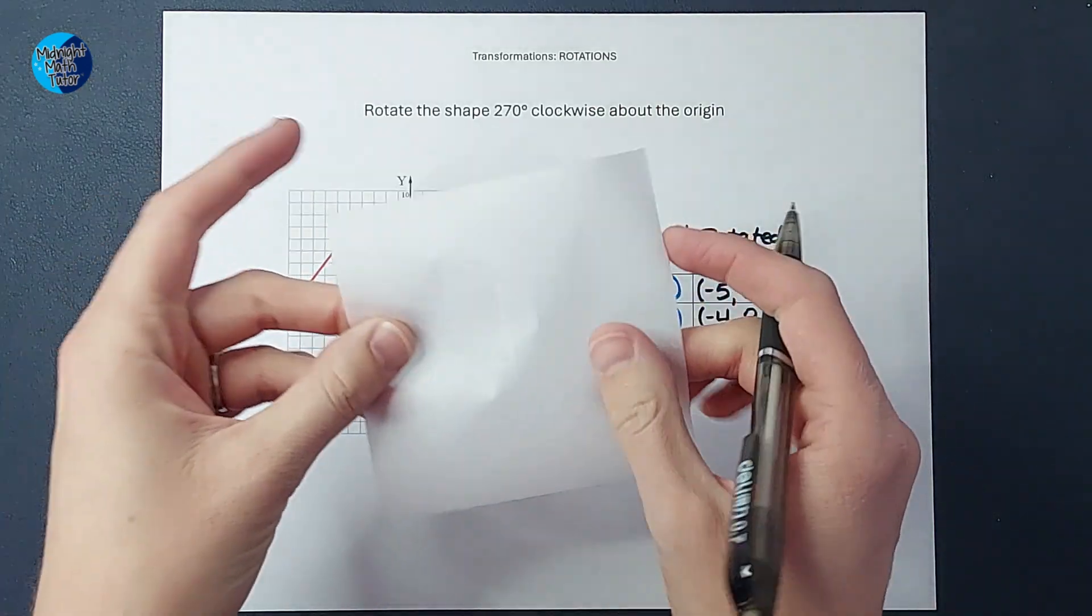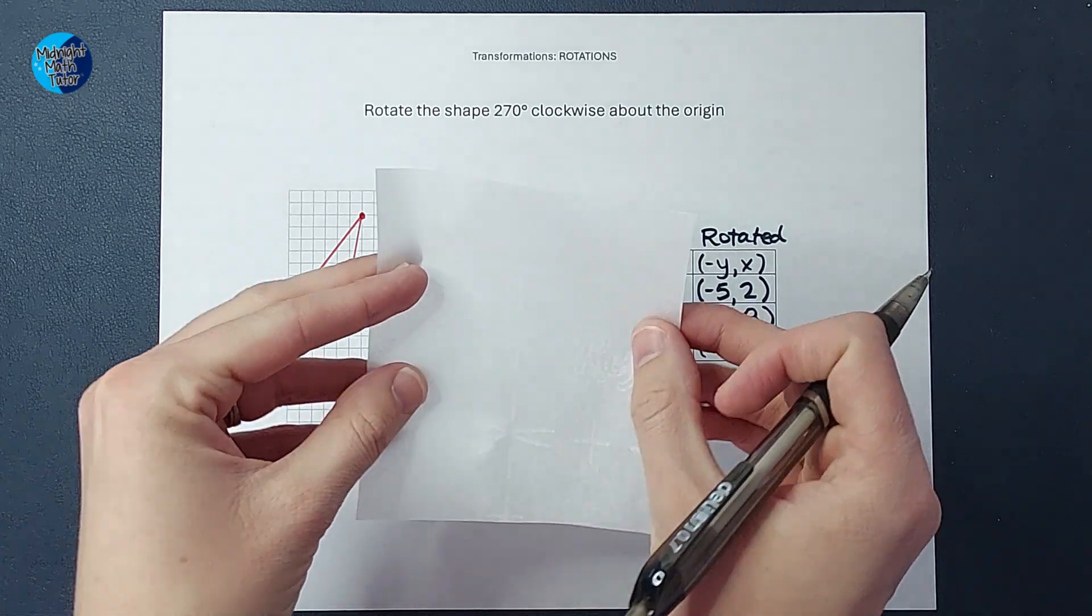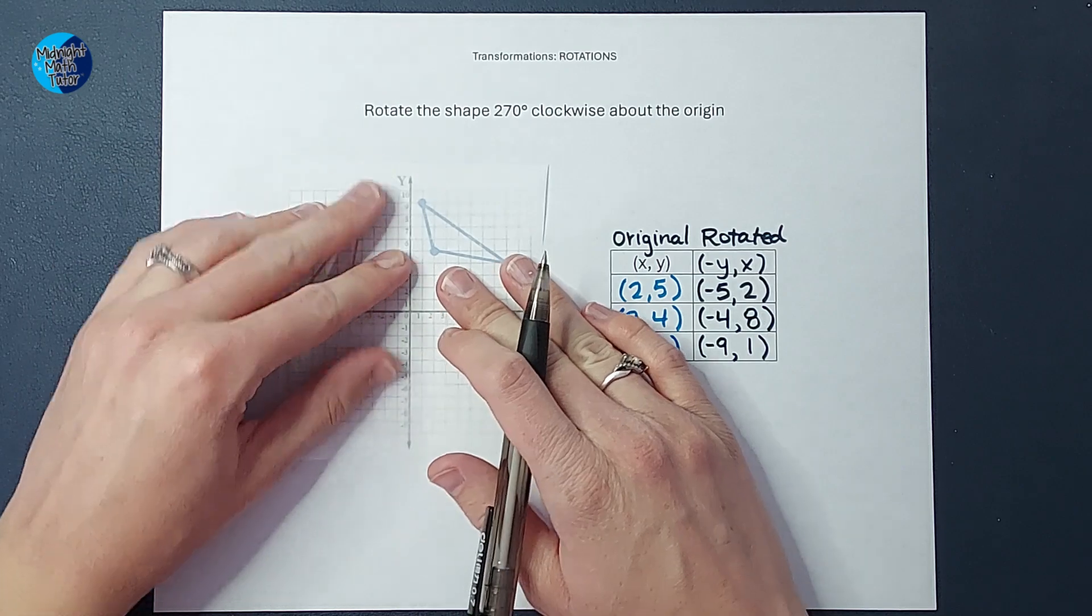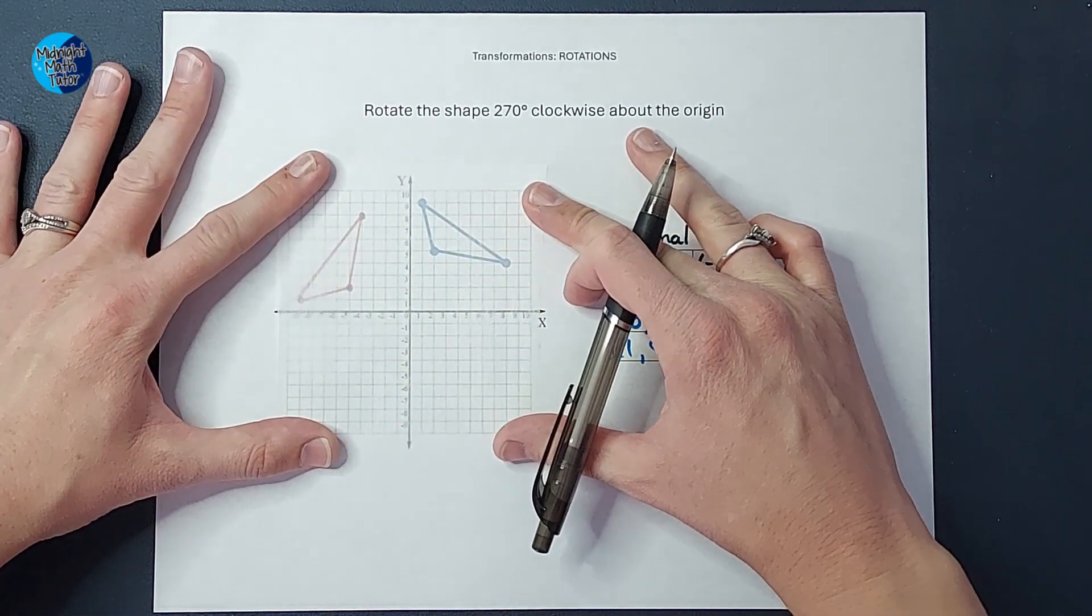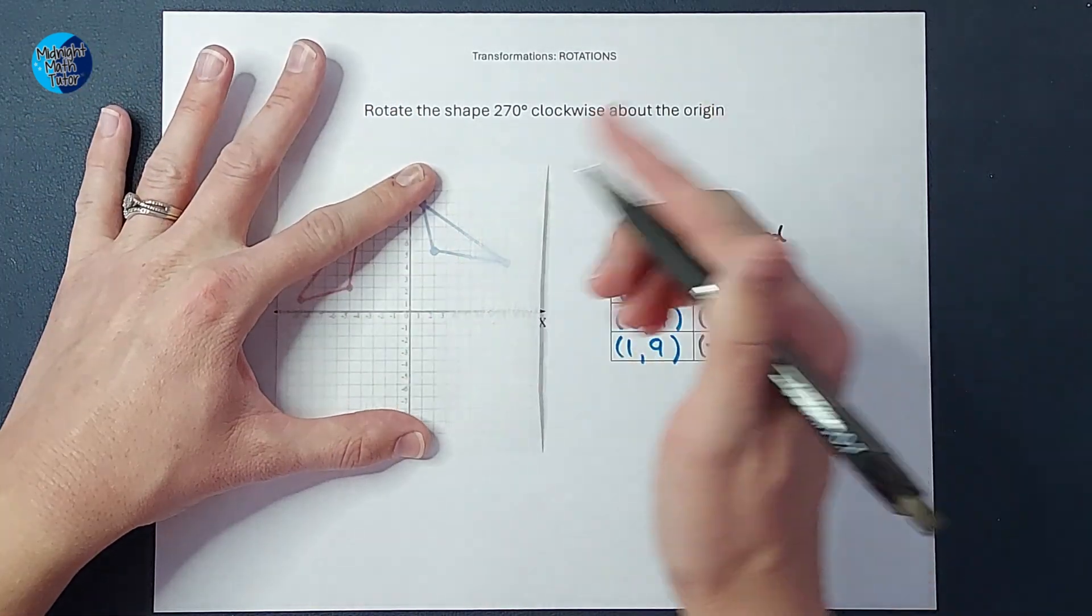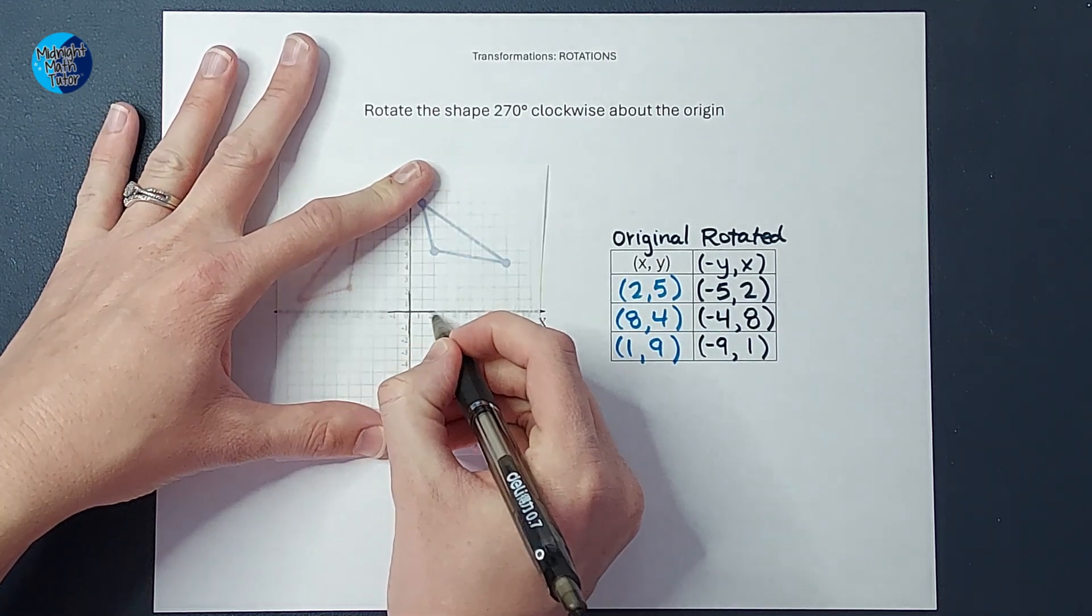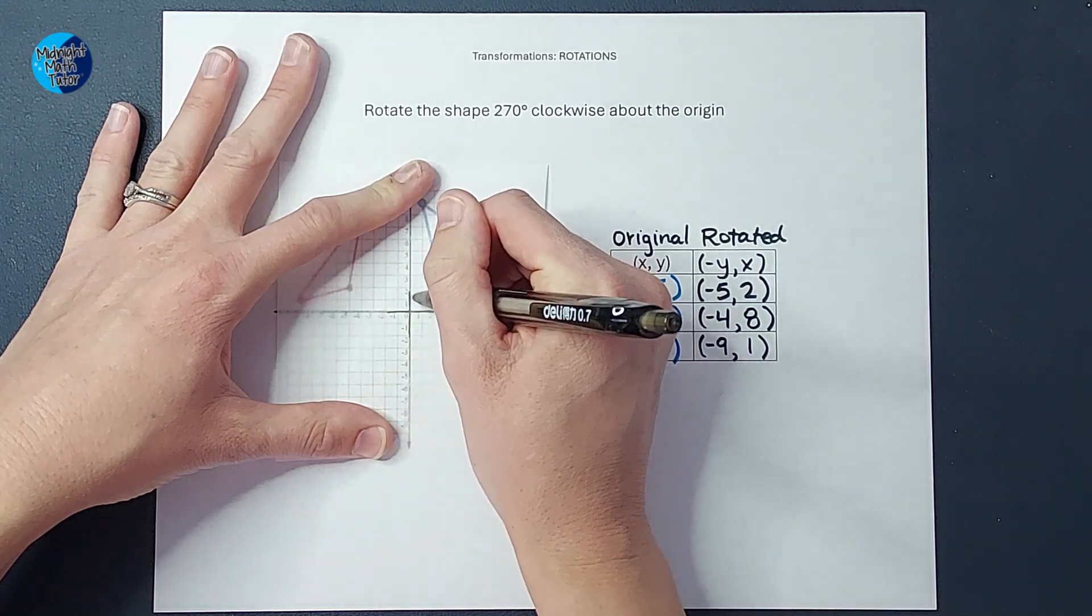So this is just regular parchment paper that I legit took from my kitchen that you can use like when you're making cookies, right? So the first thing I'm going to do, see how it's like see-through. That's nice.